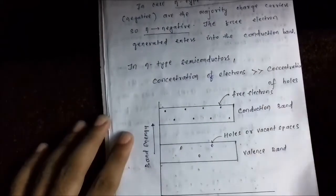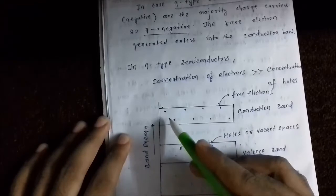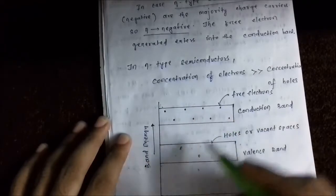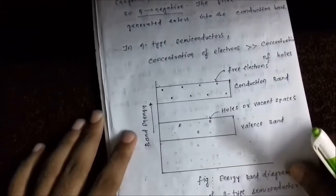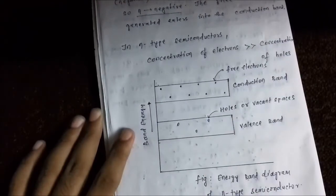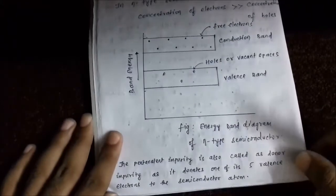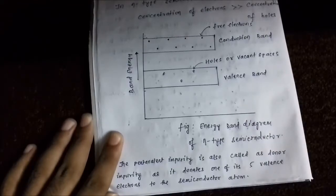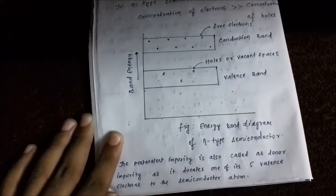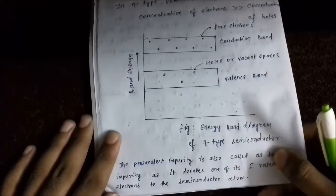Here we have the energy band diagram representation of N-type semiconductors. As we see, this is the conduction band and the concentration of electrons is much greater than the concentration of holes in the valence band. Another important note is that the pentavalent impurity generates one extra electron — in a way, it donates one electron to the semiconductor atom. So it acts as a donor impurity, called a donor impurity as it donates one of its five valence electrons to the semiconductor atom, which is responsible for the increase in conductivity.